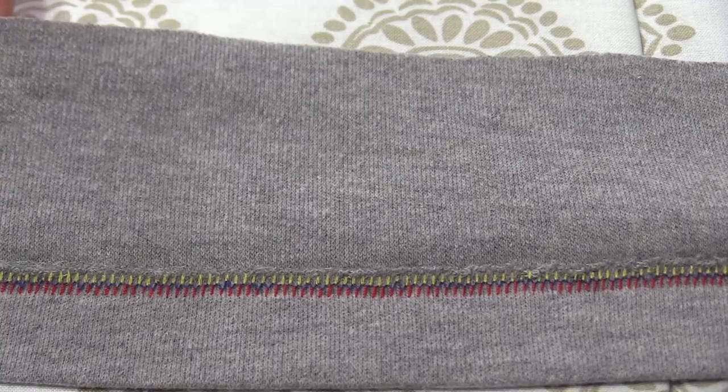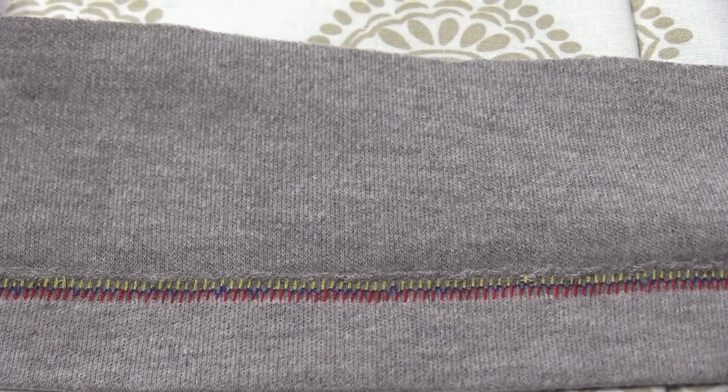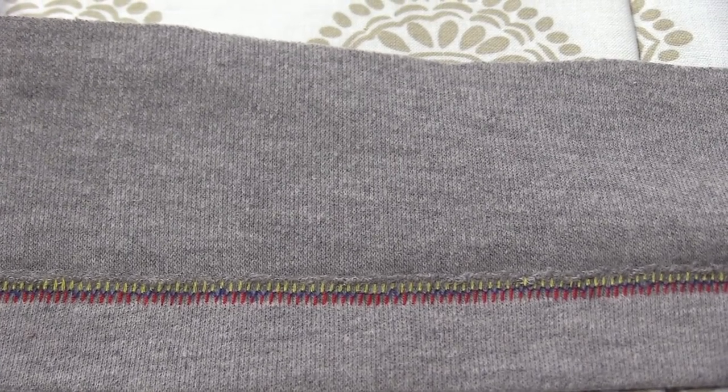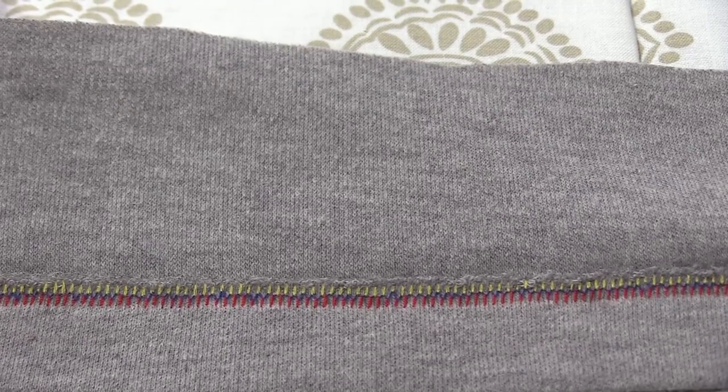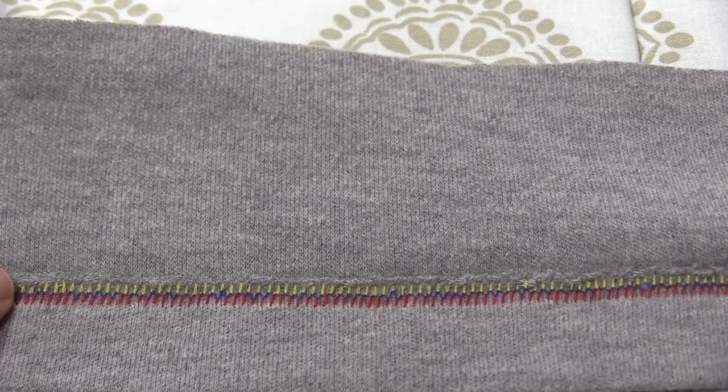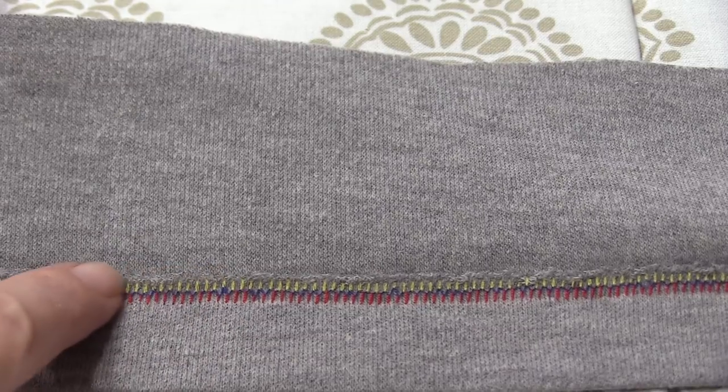Now we're flipped over to the back side and you can see that that bobbin thread wrapped between those two top threads in the twin needle and it enclosed that raw edge of our fabric.